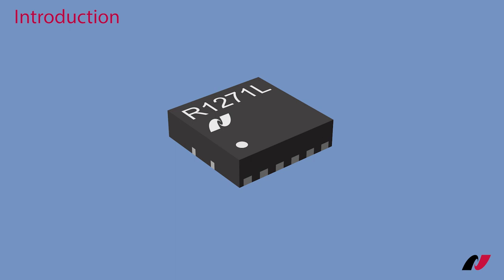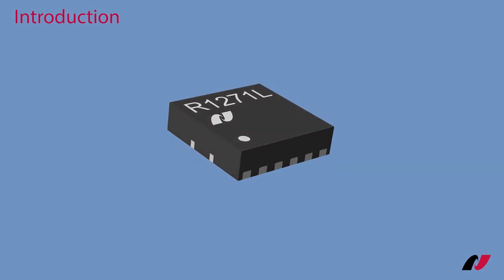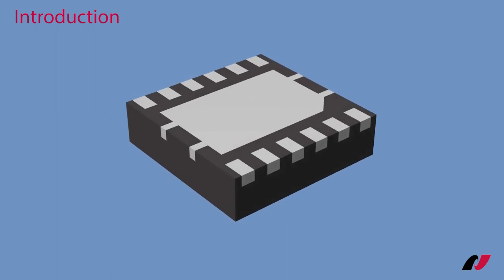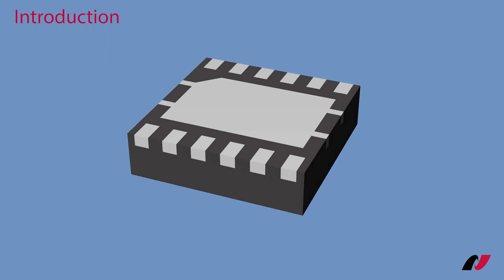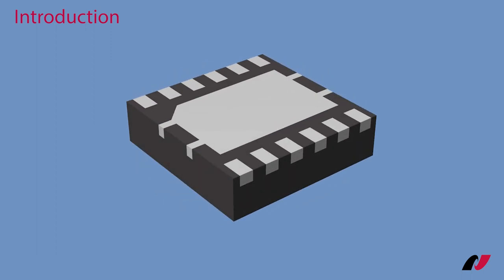Hello, this is Hans Adams from Nisshinbo Micro Devices and welcome back to another product introduction video. Today we will have a look at the compact 30-volt one-amp synchronous buck DC-DC converter R1271.